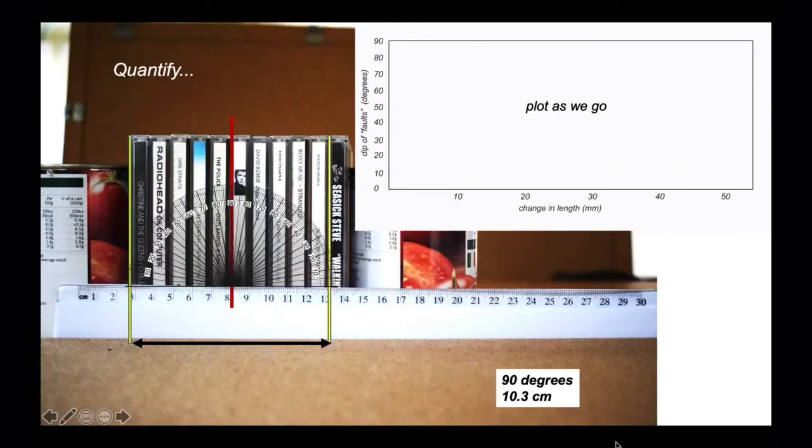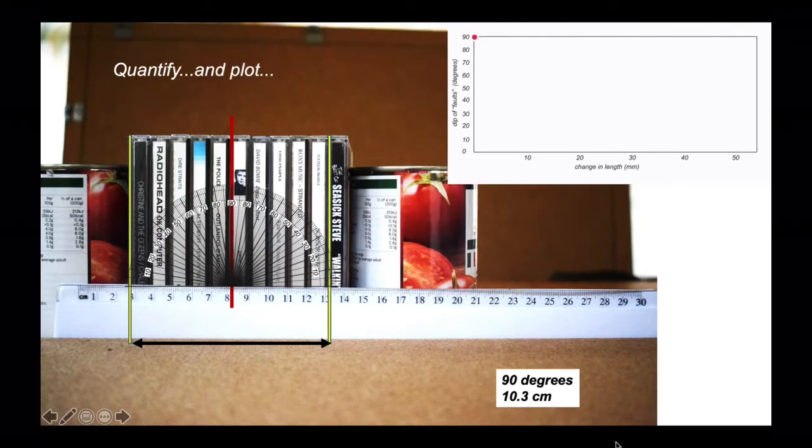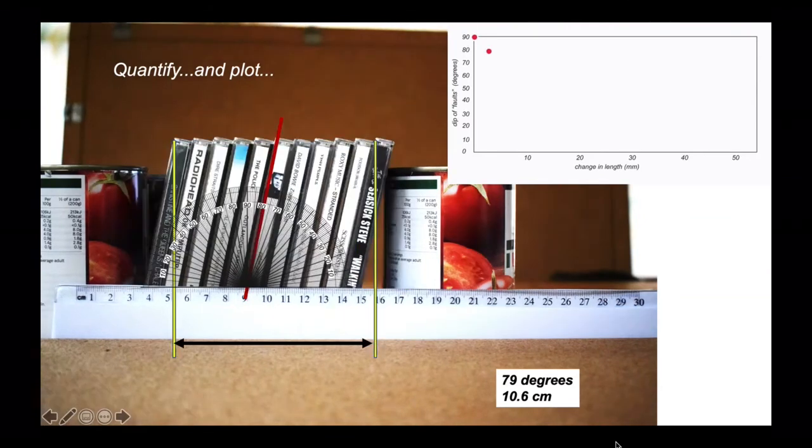We can plot this as we go. We've got the protractor that we can use to measure this. In this particular case, the angle of the faults are yet to move. They're dipping at 90 degrees, and that's the distance across the array of our CDs. So no stretch. Now we can see that the angle is opening up. The dip of the faults is 79 degrees now and we've increased the distance between the tops of our CDs.